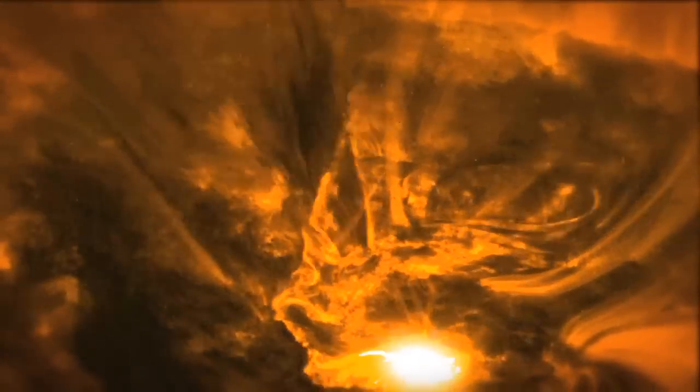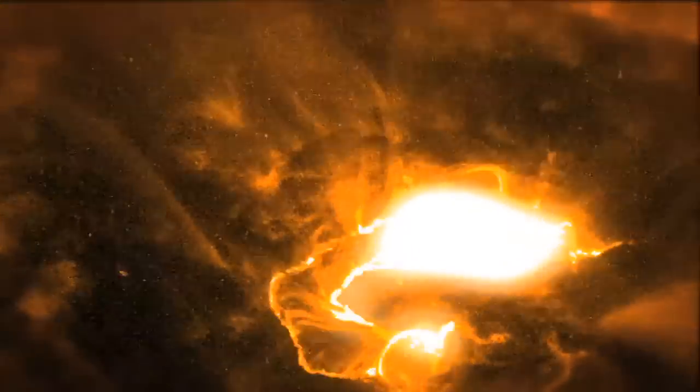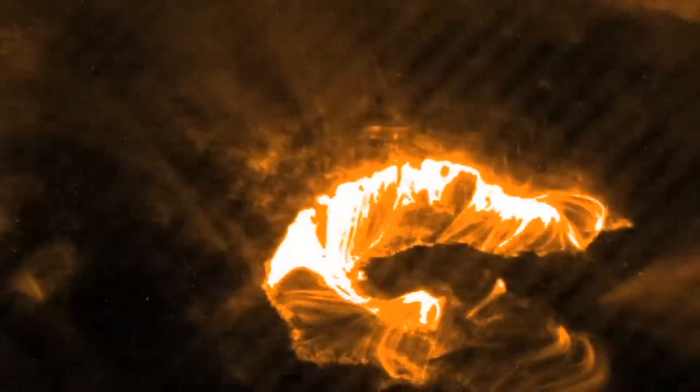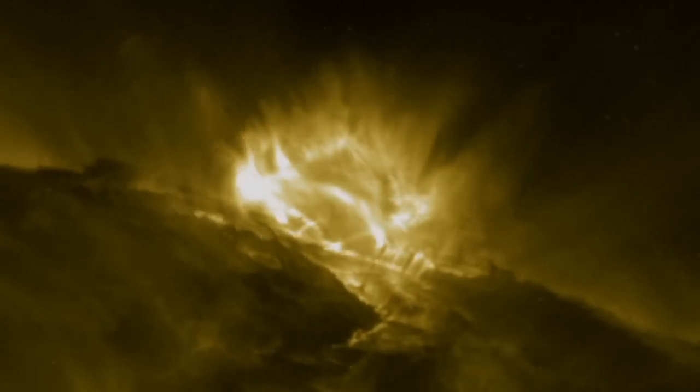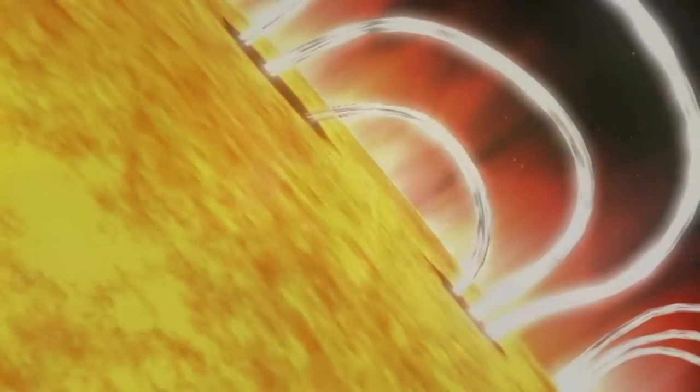So what are these solar eruptions? A solar flare is basically an explosion on the surface of the Sun, ranging from minutes to hours in length. Large flares can release enough energy to power the entire United States for a million years.